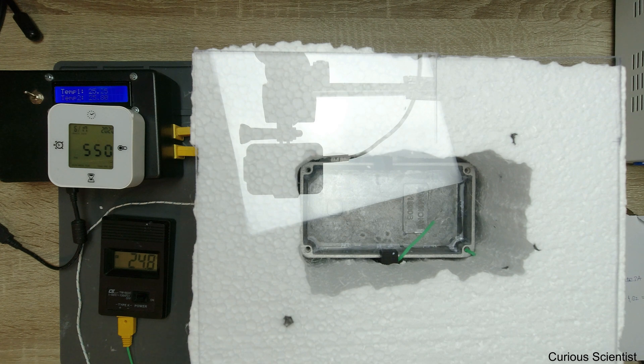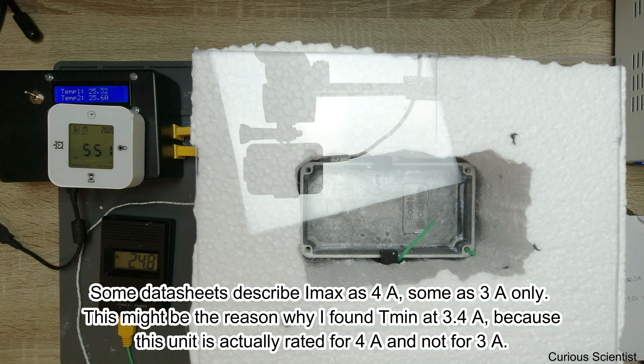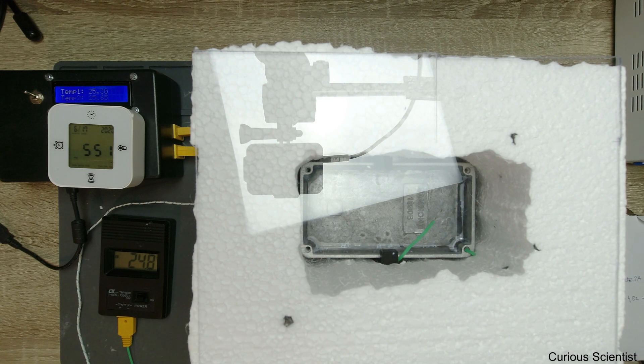I have to note that some datasheets say this unit is actually 4A. That might cause some confusion and maybe that's why I was able to determine the minimum temperature for cooling for this specific device at 3.4A, because I haven't reached the maximum current of it at 3A.